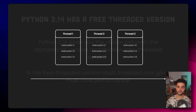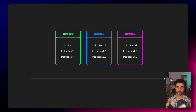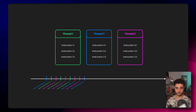Here is how the free-threaded version works. As before, we have three threads, each wanting to execute three instructions. Let's say we have more than three cores, so the capability to execute code in parallel. Now there is no GIL, so as soon as the program starts, each thread will be executed by a different core. Typically we'll get something like three times the performance compared to the GIL version. As you can see, the instructions are now interleaved between the threads because multiple cores are executing instructions at the same time.